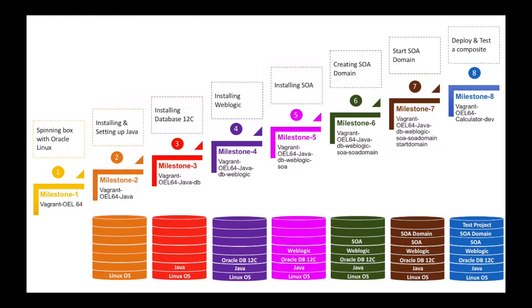Let us start the discussion by showing the waterfall model, which comprises multiple milestones and each milestone has an objective to accomplish. The primary milestone starts with spinning up the box with Oracle Linux OS and proceeds with the milestones of installing Java, Database 12c, WebLogic, creation of SOA domain, and deployment of the project in the domain.